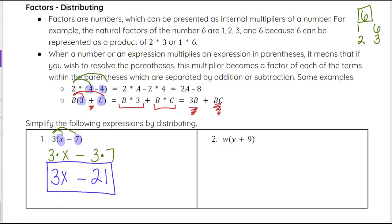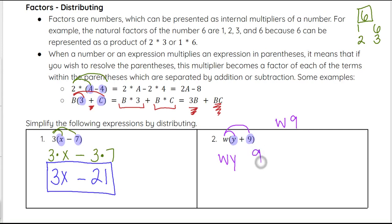In number 2, we look at what our terms are. y and 9 are terms in the parentheses because they are separated by addition. So we take the w in front and multiply it by y and by 9. w times y is wy. w times 9 — remember we typically write the number in front — so that's 9w. There's addition in between, so the answer is wy plus 9w.